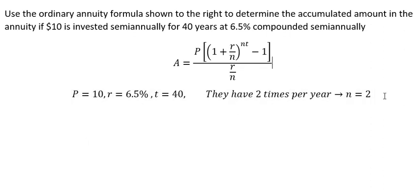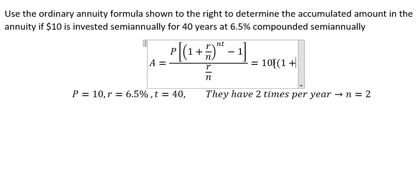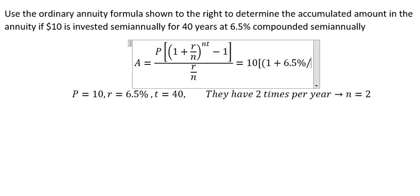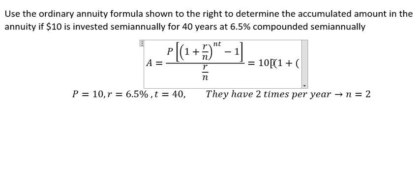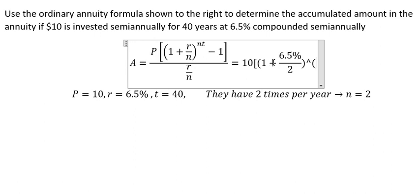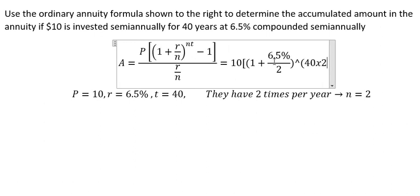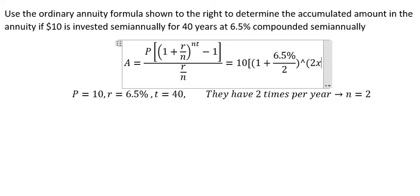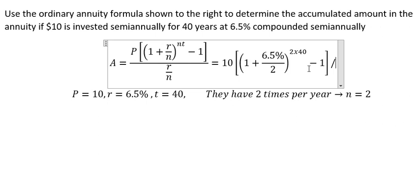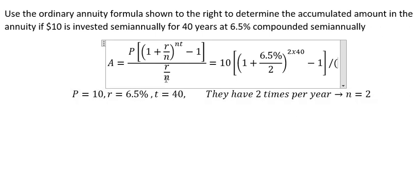Now after you got the numbers, we can put them into this formula. So this is 2 multiplied by 40 years minus 1, and we have the interest rate divided by 2.